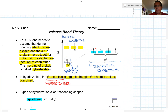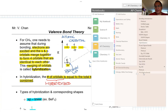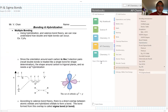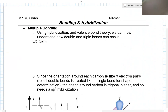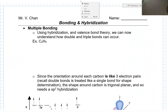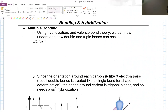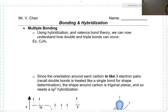That's what I want to talk about today. Using hybridization and valence bond theory, we can now understand how double bonds and triple bonds can occur. For example, C2H4 — it would look something like this if we were to draw the Lewis dot structures.